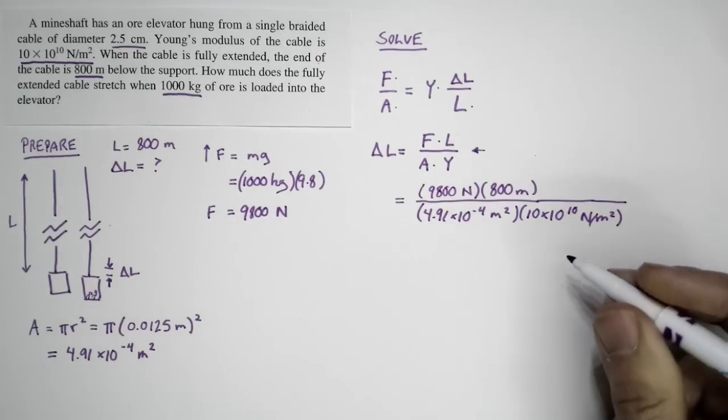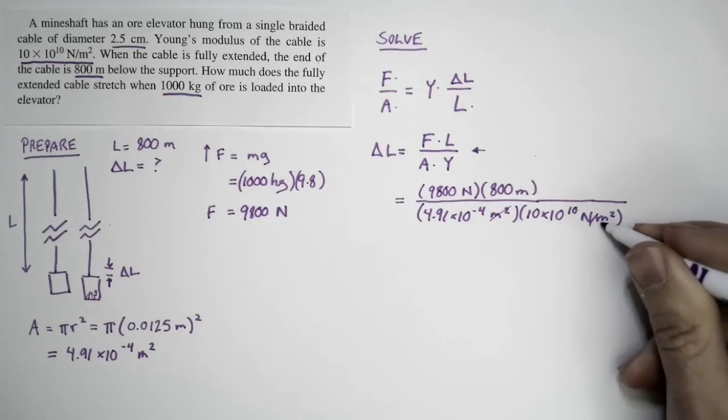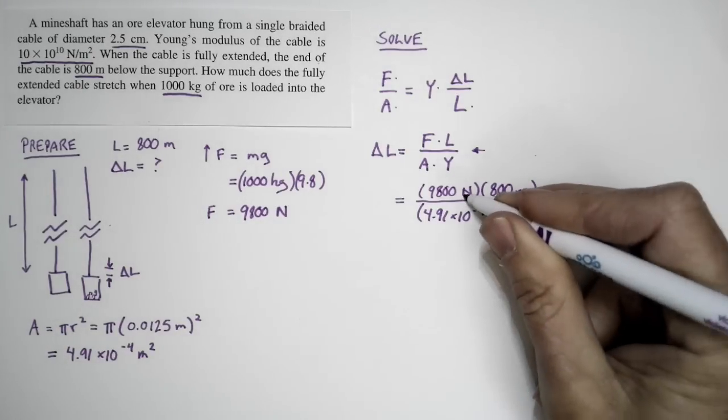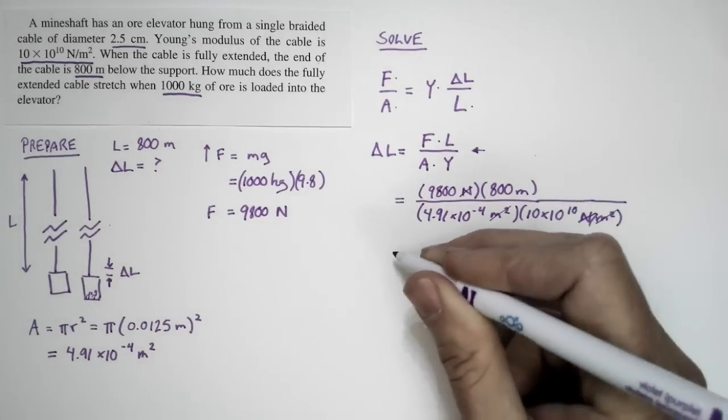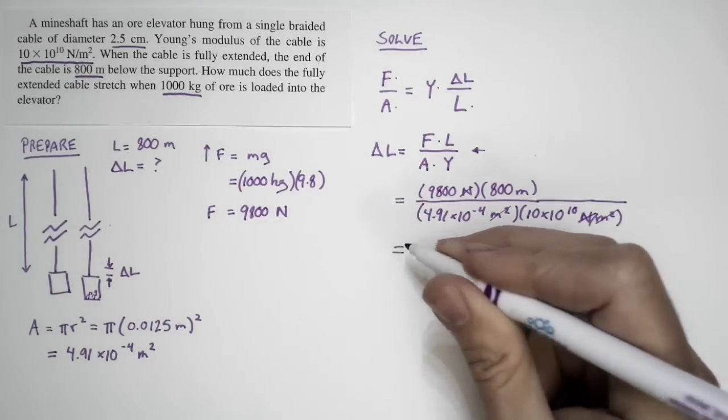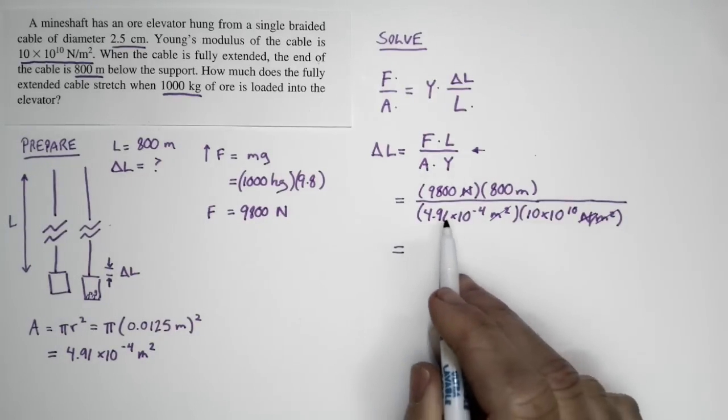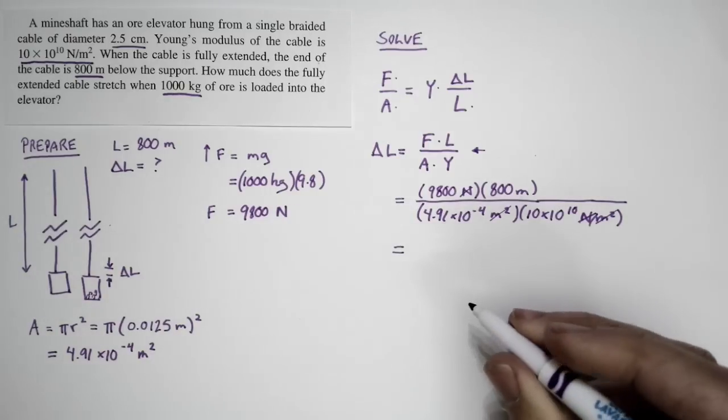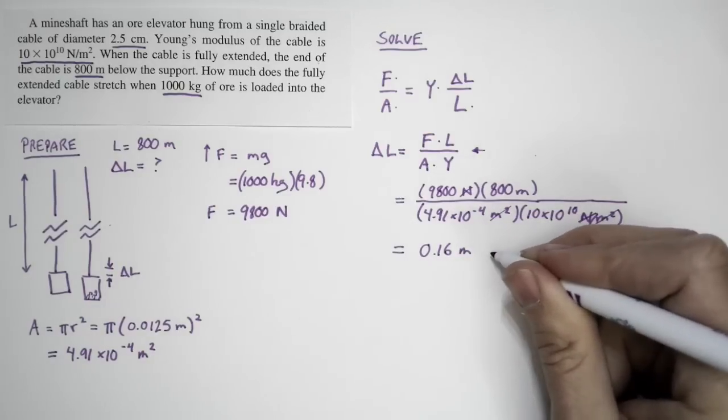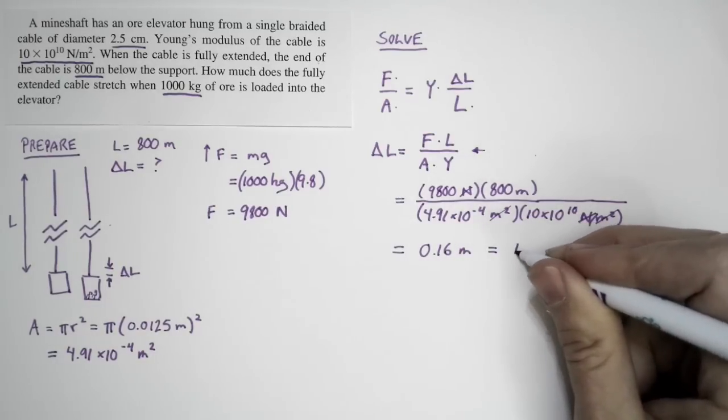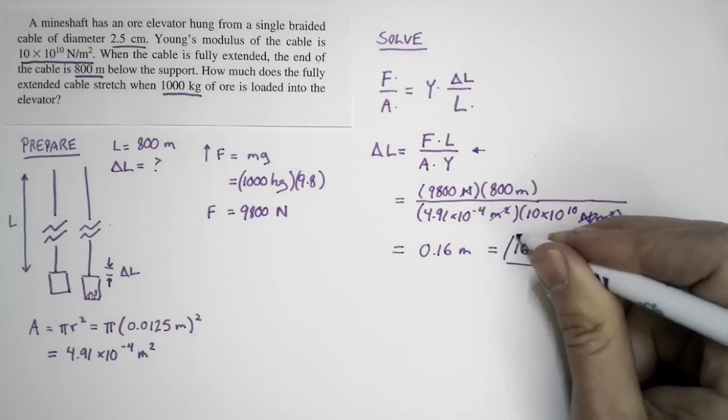One of the reasons for including units here is so we can check ourselves. I've got meters squared here that cancels with meters squared here. Newtons here cancels with newtons here. So my net result is going to be a number in meters, which is correct because we're looking for a length. The change in length, if I put numbers in and calculate this out, is 0.16 meters, which we can rewrite as 16 centimeters. That's the stretch of the cable.